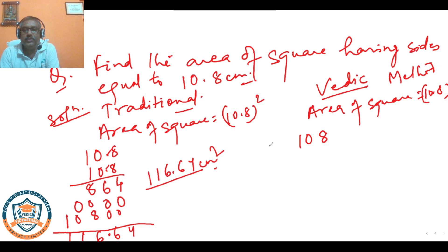Yavadunam says that whatever is the difference from the basis. 10, this is near 100, so 8 is the difference. 8 needs to be added and whatever you are adding, that same thing needs to be squared. This is Yavadunam.